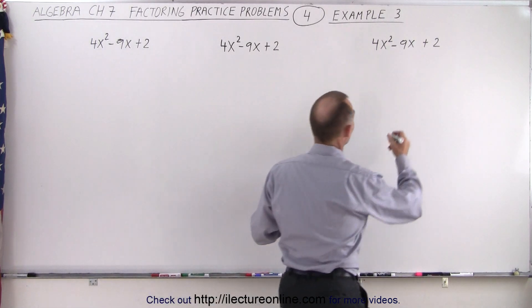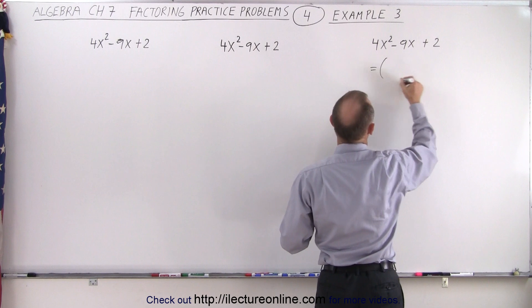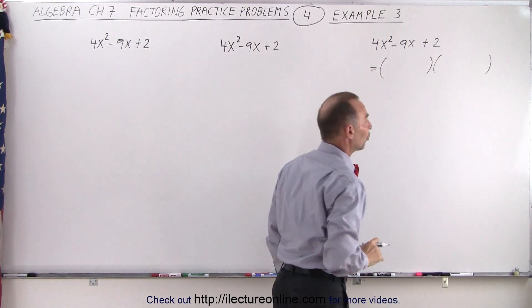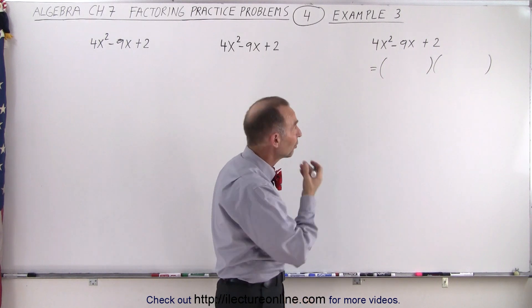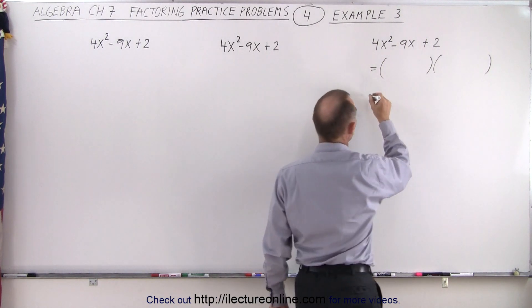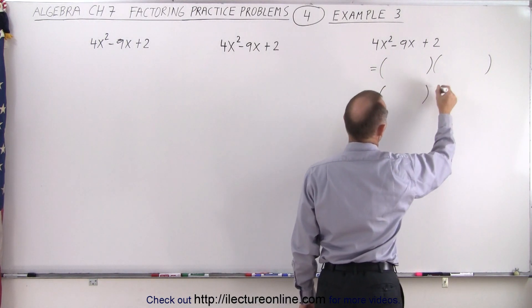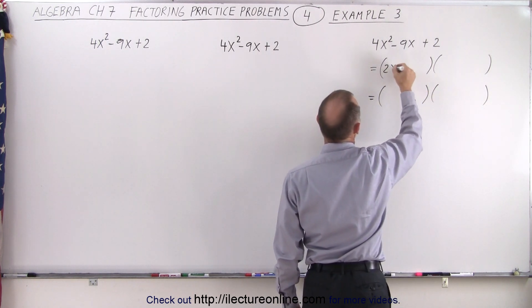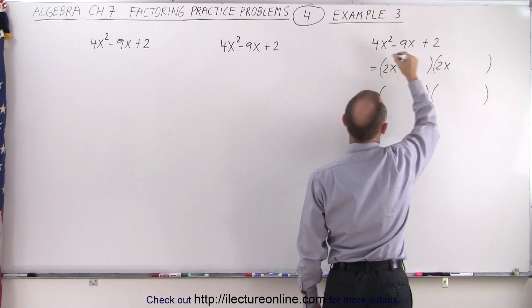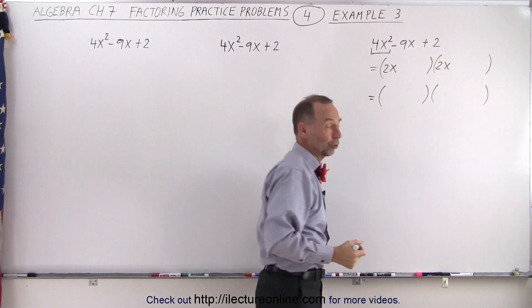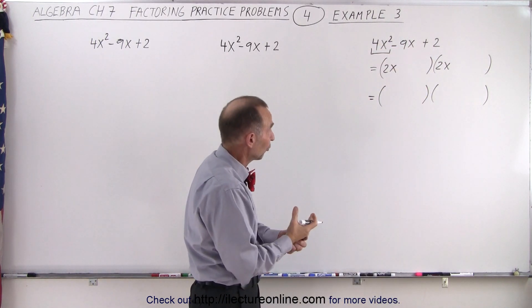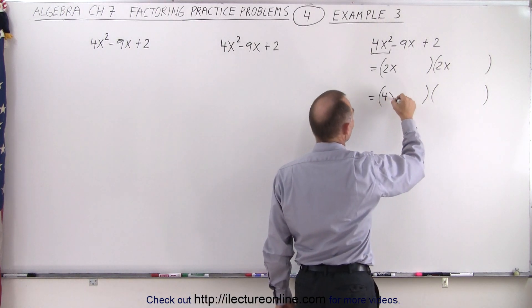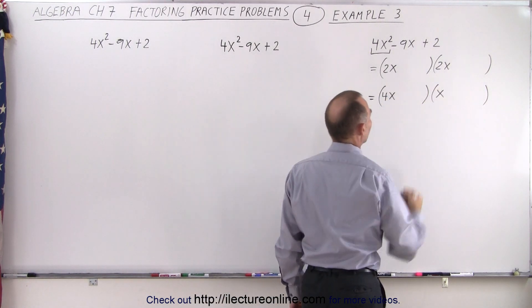So first, our first one, we're going to write it as the product of two binomials. Notice, when we look at the first term here, there's actually two ways in which we can write that. So I'm going to put two sets of binomials down. I could write this as 2x times 2x to get the first term, or we can write 4x times x, one or the other.